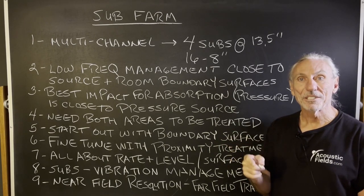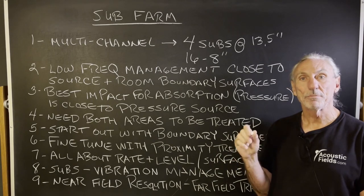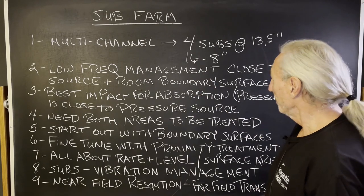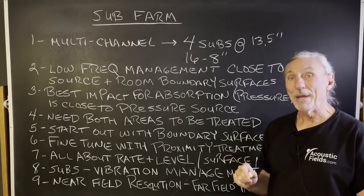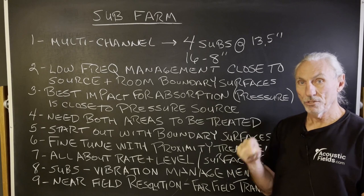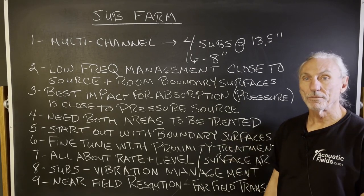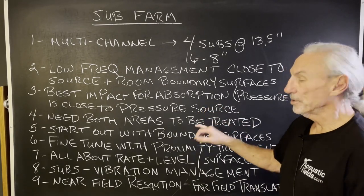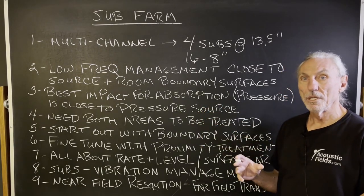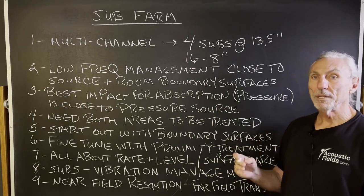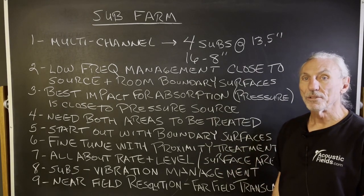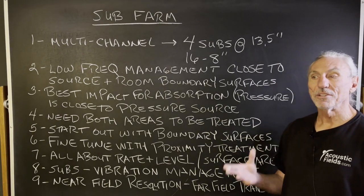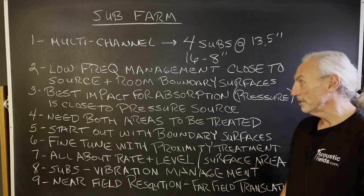Timbre and tonal qualities are all the same, and you need that consistency and predictability — just like you need that consistency and predictability in your treatment performance. Low frequency management is best placed in two areas: around the source, the subwoofer, and at the room boundary surfaces where pressure is the greatest. If you put the absorption close to the subwoofer in the general area around it, you minimize the pressure before it gets out into the room. You tighten it up — the attack and the decay that the subwoofer is able to deliver into the room is much, much better.